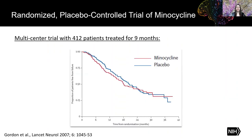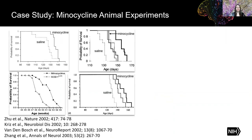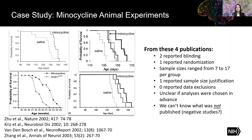Now let's revisit the story of minocycline. We know it failed in a clinical trial of ALS, but we don't know why. Looking more closely at the original animal studies, from four example papers: two reported whether they blinded, one reported whether they randomized, sample sizes ranged from 7 to 17 per group but only one reported a reason for that choice, none reported whether or not they excluded data or why, and it's unclear if analyses were chosen in advance. And of course, we can't know what was not published — were there negative studies that never made it into the literature?